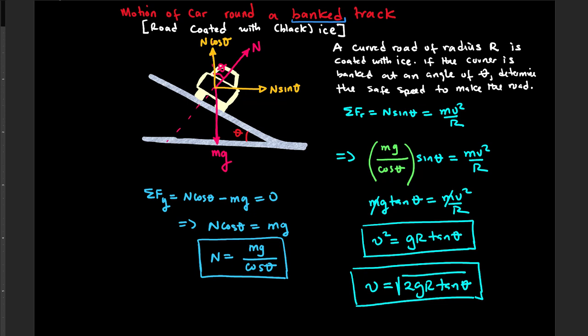Hello everybody. In the previous example, we talked about a car moving around a banked track on a road coated with ice, in which case there was no friction force between the road and the car.